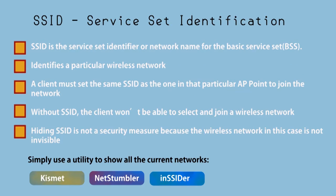SSID is the service set identifier, or network name, for the basic service set. It identifies a particular wireless network. A client must set the same SSID as the one in that particular access point to join the network. Without an SSID, the client won't be able to select and join a wireless network.